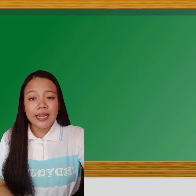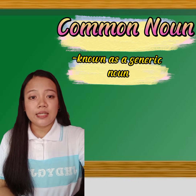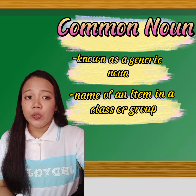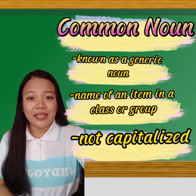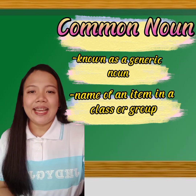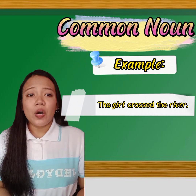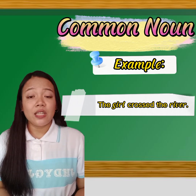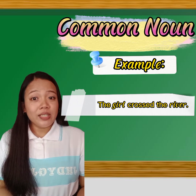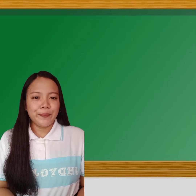On the other hand, the opposite of the proper noun is the common noun, sometimes known as the generic noun. A common noun is the generic name of an item in a class or a group and is not capitalized unless appearing at the beginning of a sentence or in a title. For example, the girl crossed the river. Girl is a common noun — we do not learn the identity of the girl by reading this sentence, though we know the action she takes. River is also a common noun in this sentence.